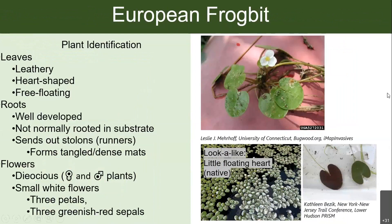For identification, the leaves are leathery and heart shaped. You may be tempted to think that this looks similar to other floating aquatic plants like whitewater lily, but the leaves are extremely small compared to whitewater lily — only about a half an inch to two and a half inches — so it's more likely to look like a little floating heart. The photo included on the bottom shows a native plant which isn't as common as whitewater lily, but is still somewhat present in our water bodies, and also has very small, heart-shaped leaves.